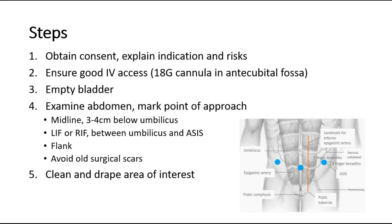These are the steps of peritoneal tapping. First, obtain consent from the patient. Explain the indication for why we have to do this procedure and the risks of peritoneal tapping, for example infection, bleeding, or organ injury. Ensure good IV access, for example an 18-gauge cannula in the antecubital fossa.